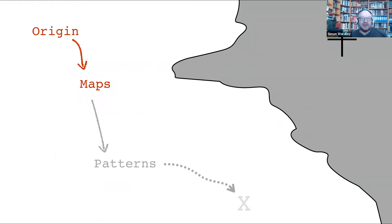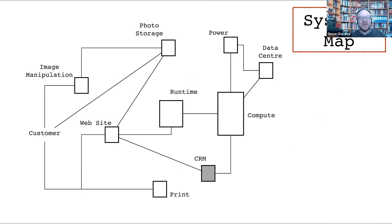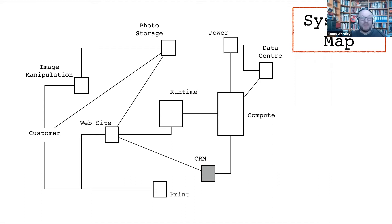That brought me to the issue of maps. I looked around and asked: where are my maps of my business? We had strategy maps, business process maps, mind maps, systems maps — loads of them. I took a systems map for building an online photo service. There was a component called CRM. I moved it. How has the map changed? It hasn't. But if you take a geographic map and shift Australia next to England, the map clearly changes. So why didn't mine change? The answer is simple: it's not a map, it's a graph. Everything we had in business — mind maps, systems maps, strategy maps, business process maps — all had one thing in common: they weren't maps, they were graphs.